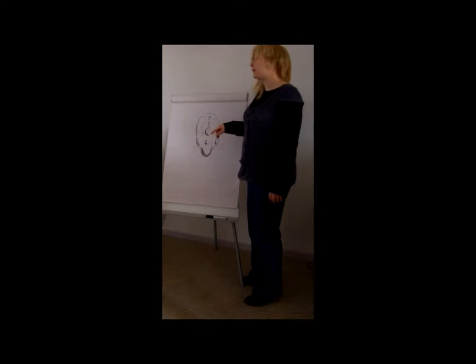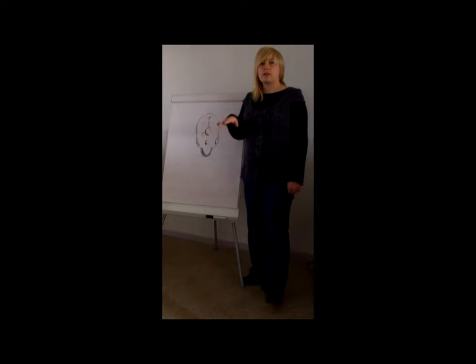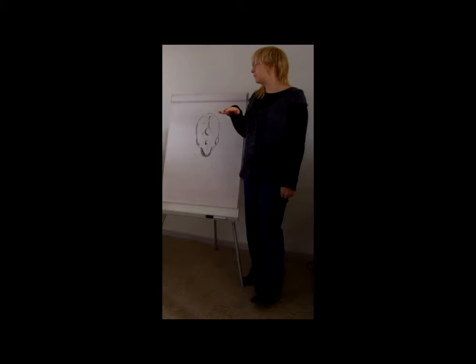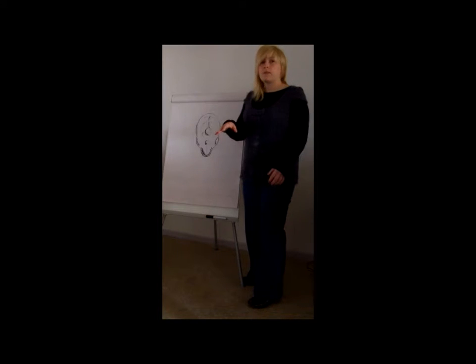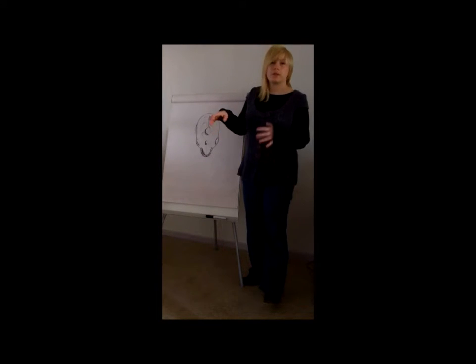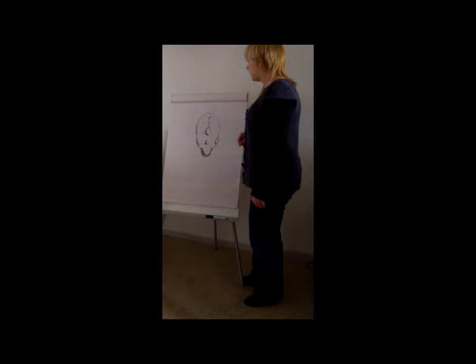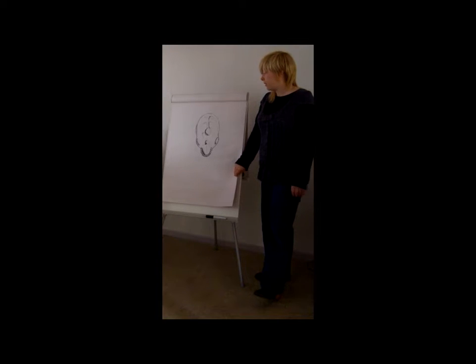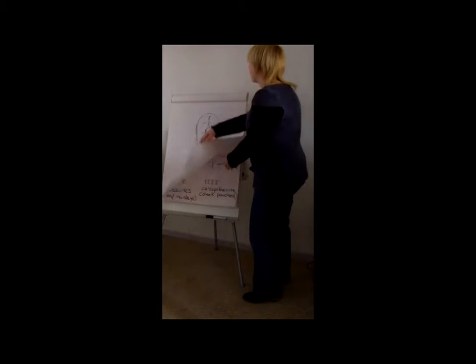If this was a strepsirhini it would be further back, and that's because when a strepsirhini is stood vertical, when it's stood up it's not as vertical as a haplorhine would be. If you think of the difference between a lemur standing up and a chimp standing up, the position of the spinal cord would be in a different place, and so is the hole into which it needs to pass. So again we can tell the difference between haplorhines and strepsirhini that way.